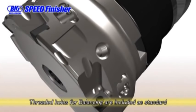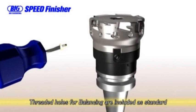The cutter body has threaded balancing holes as standard to correct the balance when it is mounted on an arbor.